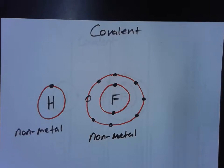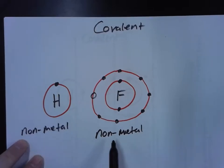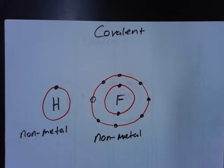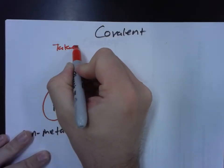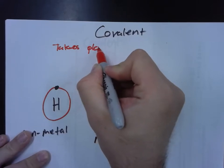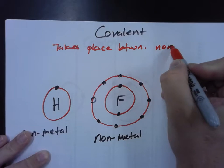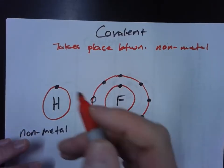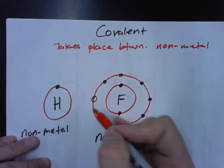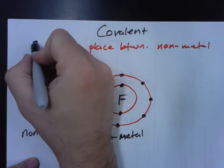Next is covalent bond. Go ahead and copy this. And if you'll notice in the covalent bond, you've got two non-metals. It takes place between two non-metals. It doesn't have to be two. It can be way more than two. Like DNA is millions of molecules or millions of atoms.